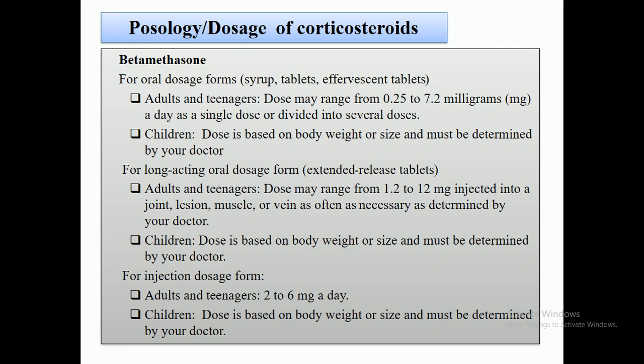For example, if the drug is given at 2.2 mg per kg body weight and the patient weighs 10 kg, then the required dose is 22 mg. For another patient, if the dose in the literature is 3 or 4 mg per kg body weight and the patient weighs 20 kg, you simply multiply it. You can adjust the dose according to the condition of the patient.